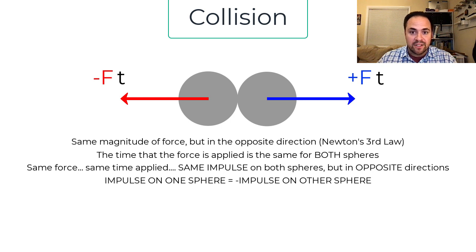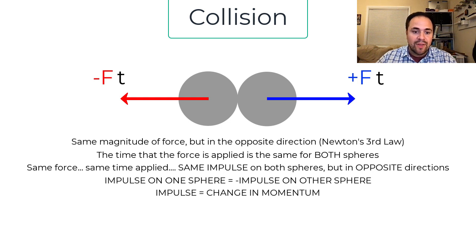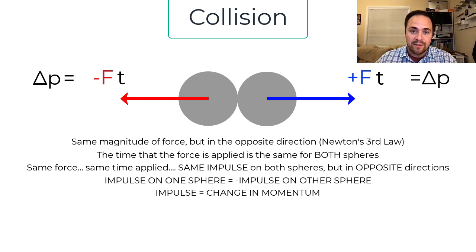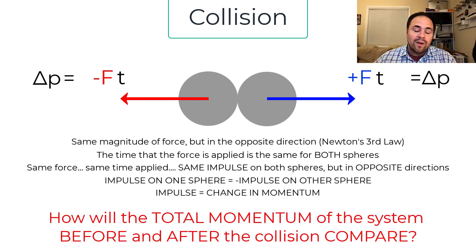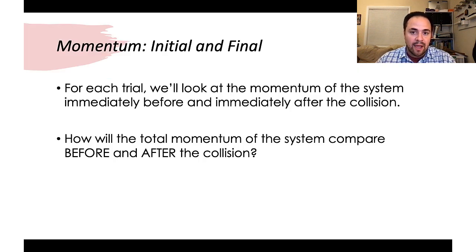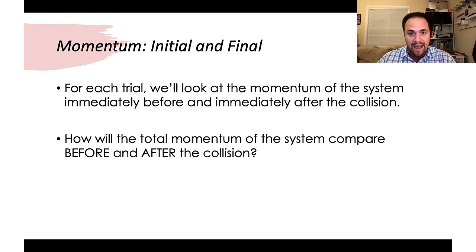Since impulse equals the change in momentum, both spheres experience the same change in momentum in opposite directions. Think about what that tells you about the total momentum of the system before and after the collision. For each trial with the Newton's cradle, we'll look at the momentum immediately before and immediately after the collision.